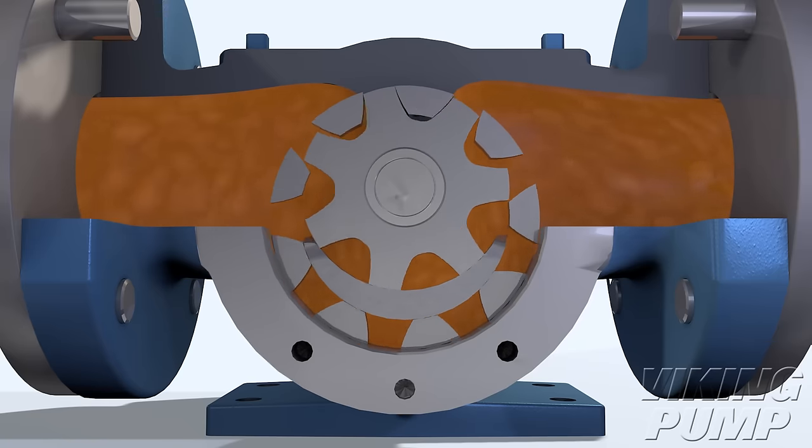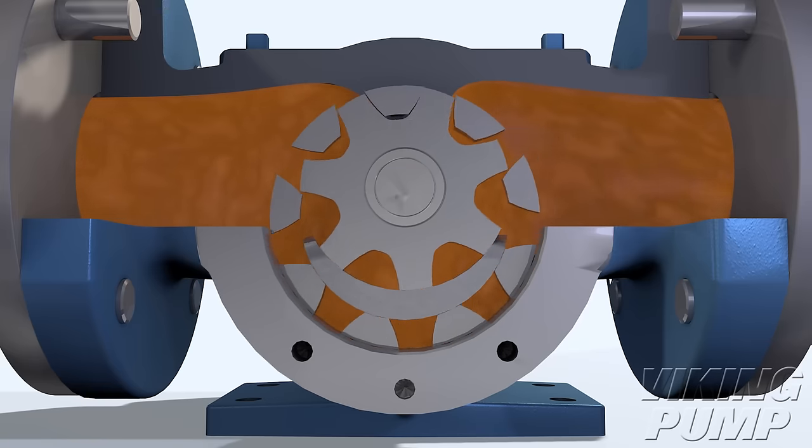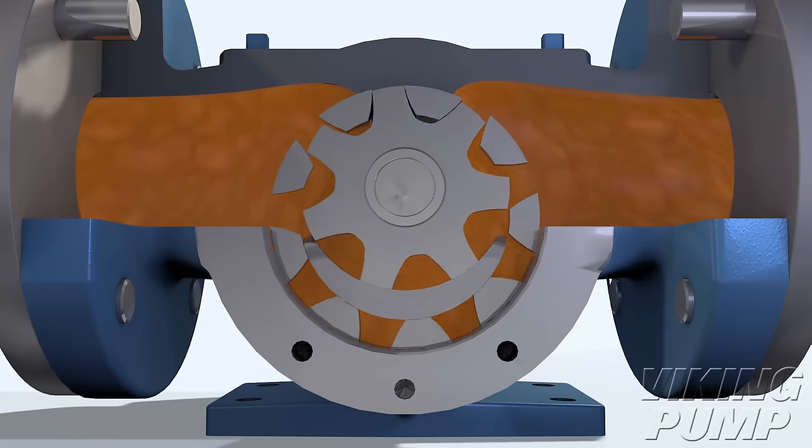The intermeshing gears of the rotor and idler form lock cavities for the liquid to ensure volume control.